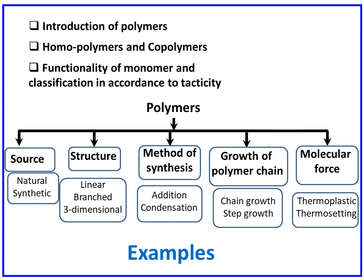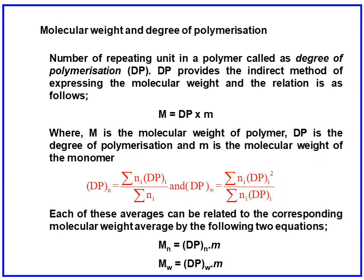To summarize the classifications of polymers: by source — natural, synthetic, semi-synthetic; by structure — linear, branched, three-dimensional; by method of synthesis — addition, condensation, copolymerization; by growth of polymer chain — chain growth and step growth; by molecular force (thermal response) — thermoplastic and thermoset. You need to keep examples of all these polymers.